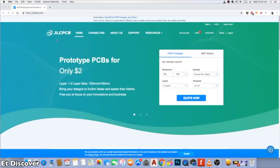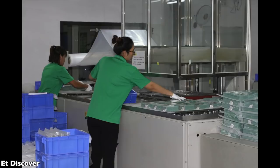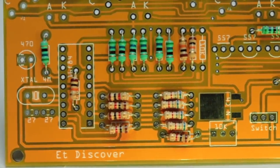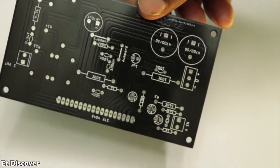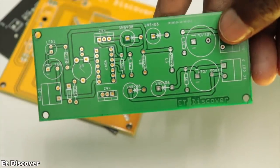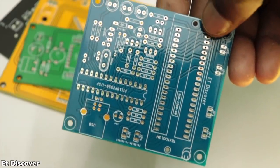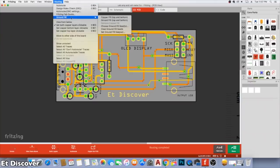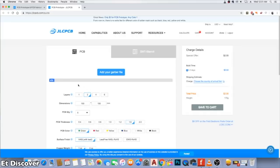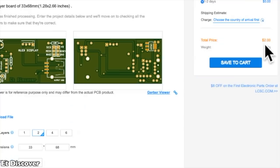This video is sponsored by JLCPCB. This is the largest manufacturer company in China. I ordered this board from JLCPCB. JLCPCB does not take any extra charge for the color if your board size is 100x100mm. If you want to make it, the Gerber file can be downloaded from the description, and you can order it for only $2.